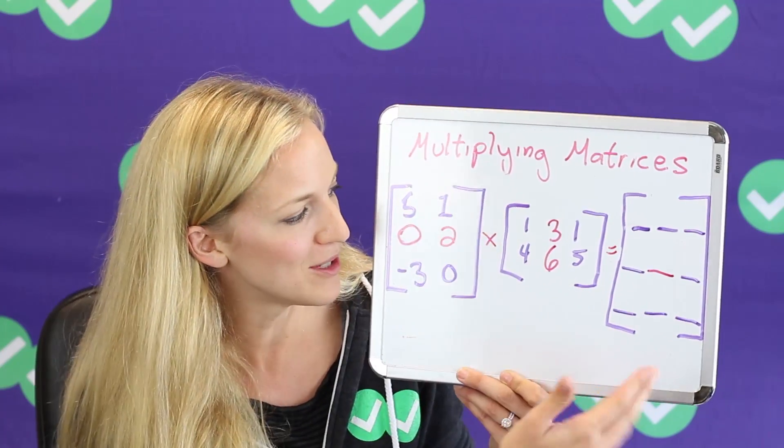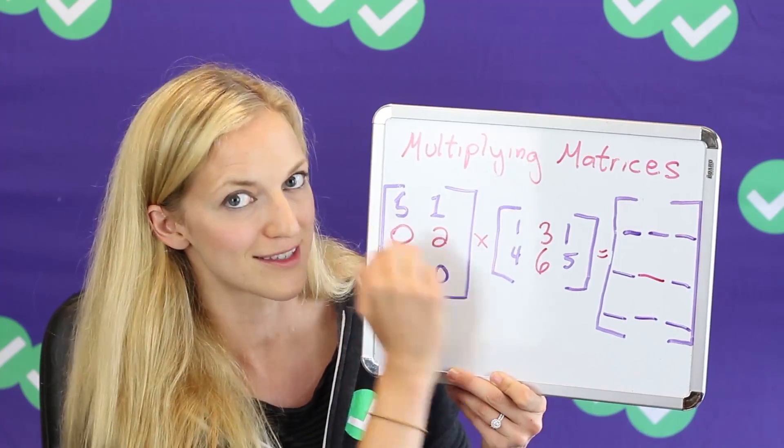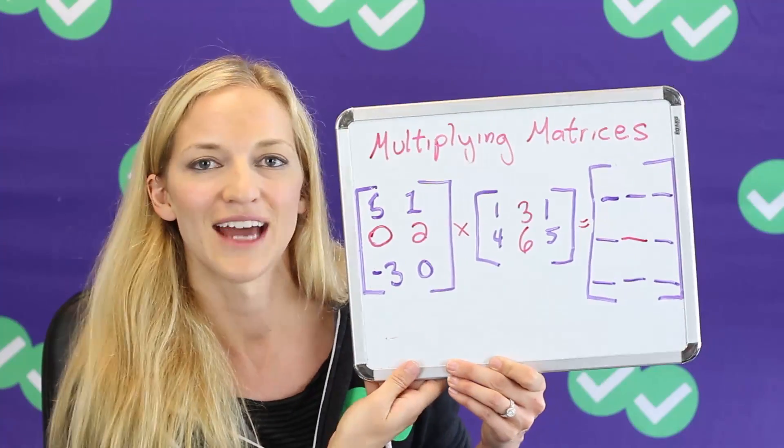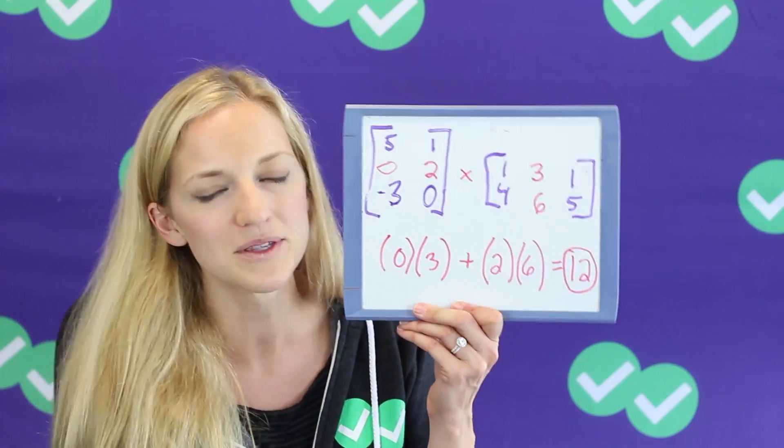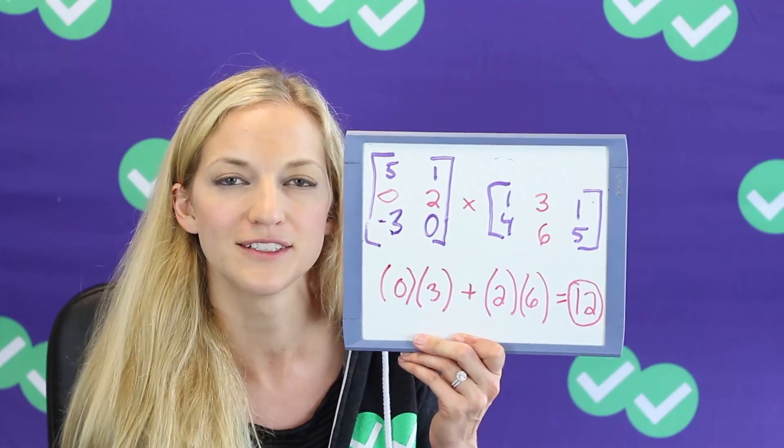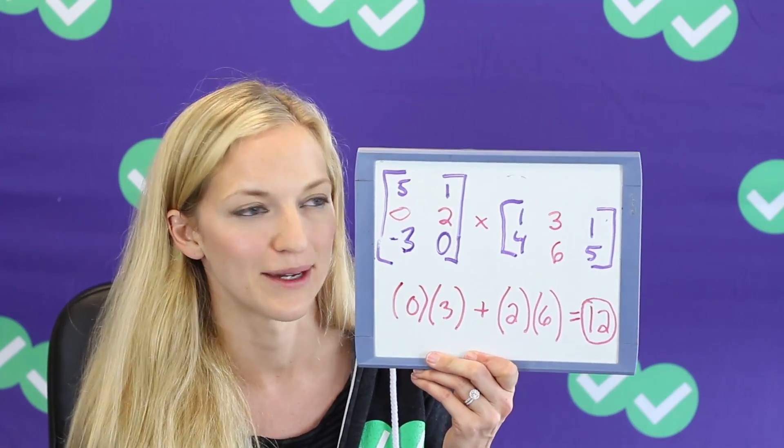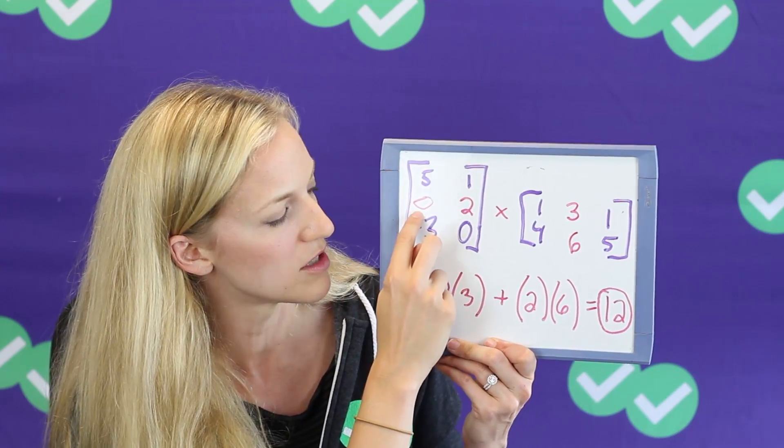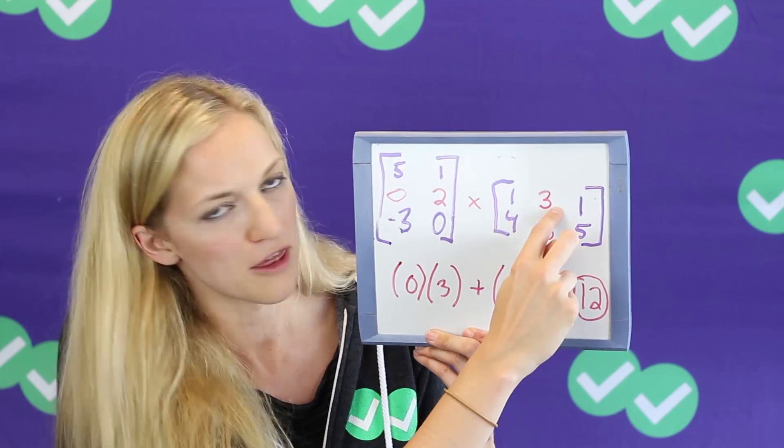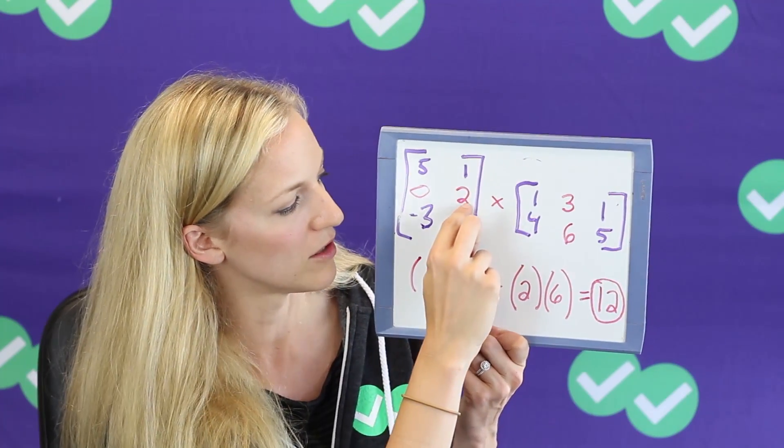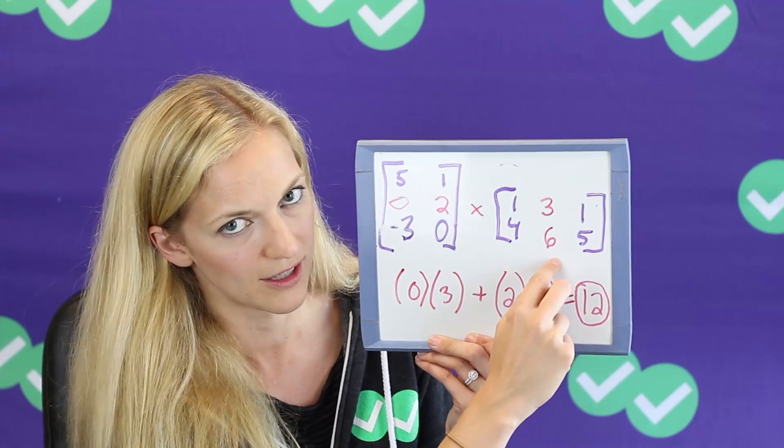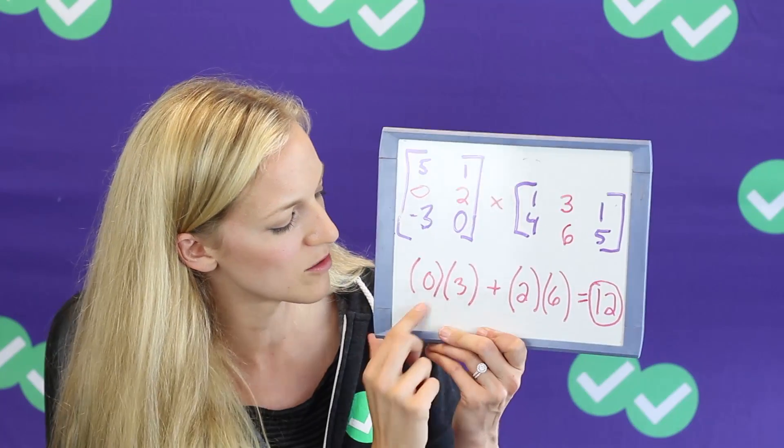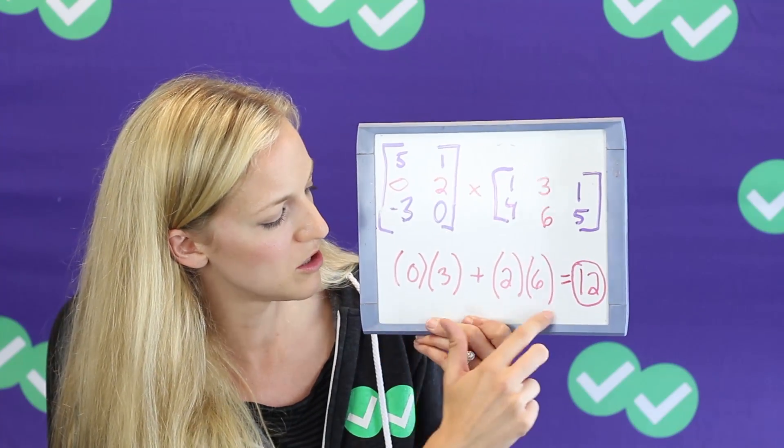All right, so you got this far. We know we want this second row, second column, so we're looking at second row, second column. Now how do you compute that? Well, what you're going to do is you are going to multiply the corresponding digits and then add them together. So we're looking at that first one here in the first row, zero, and we're going to multiply it by three. And then we're going to take the second one, two, and multiply it by the second one in that column, six. So we have zero times three plus two times six.